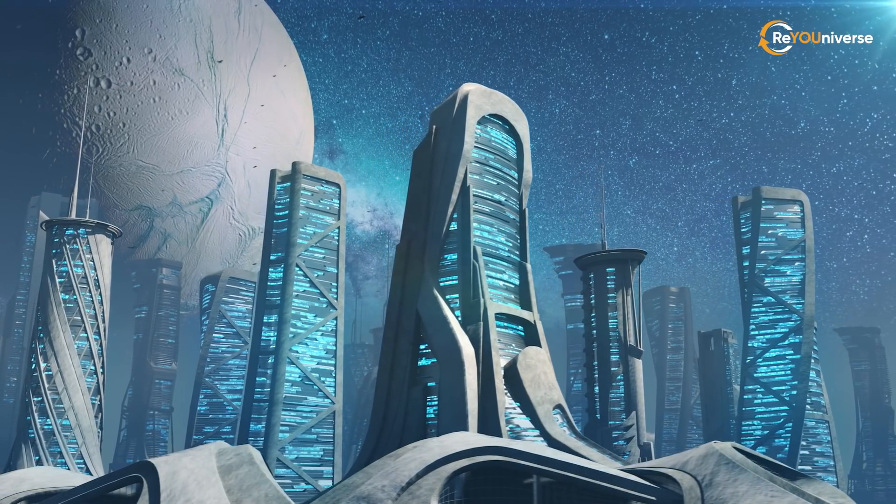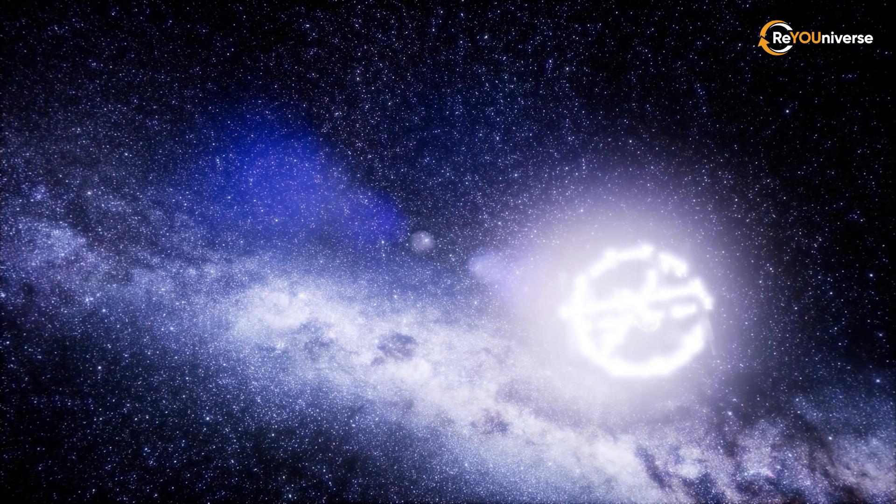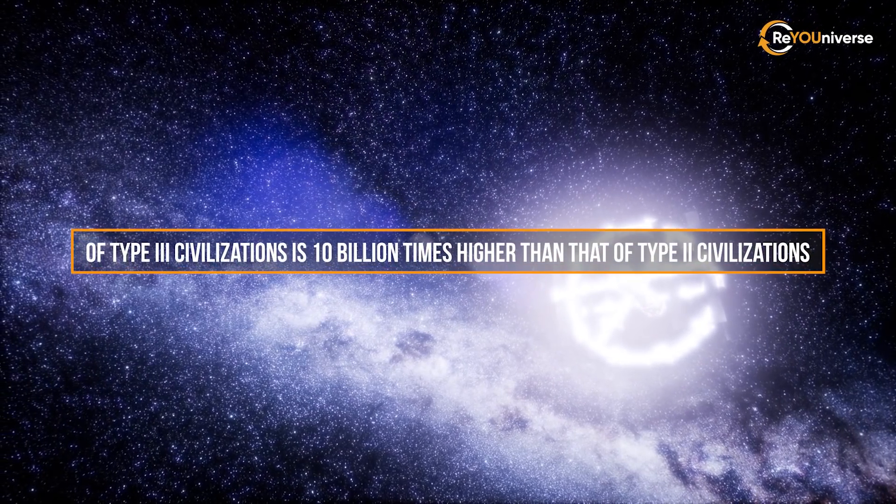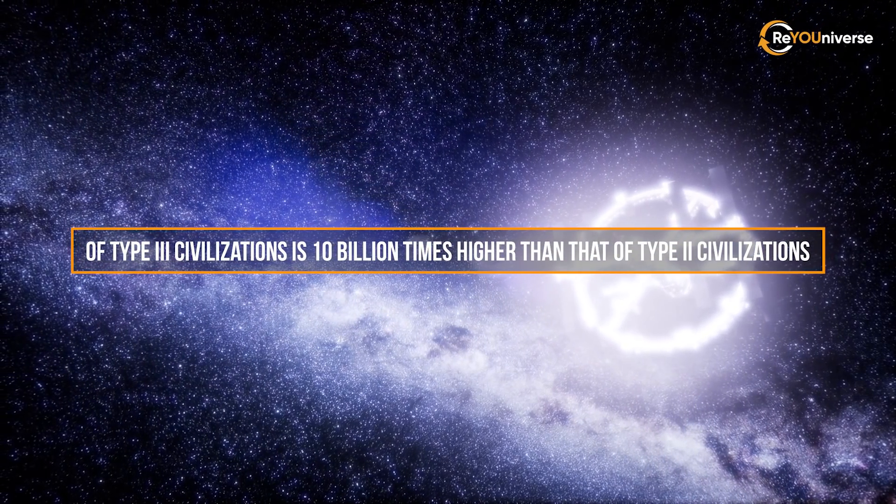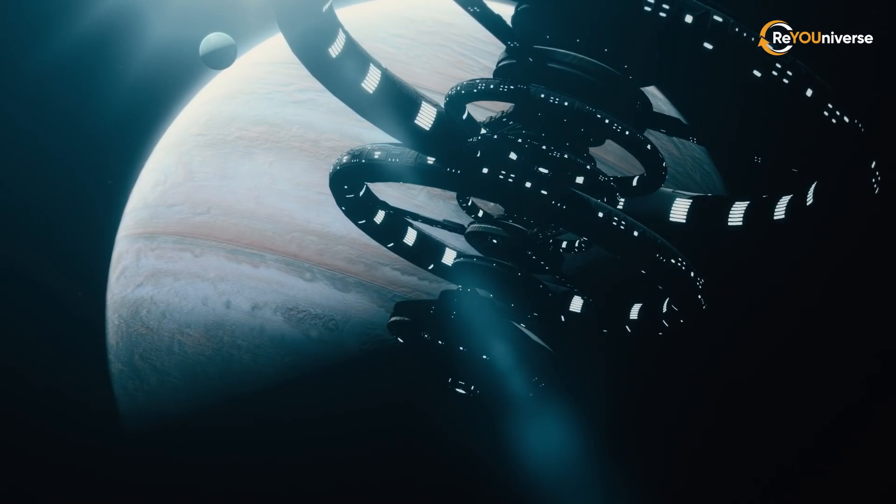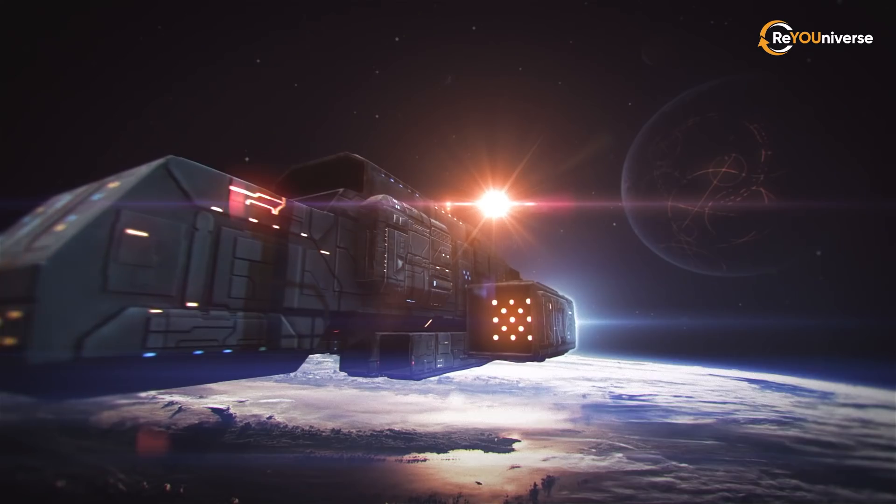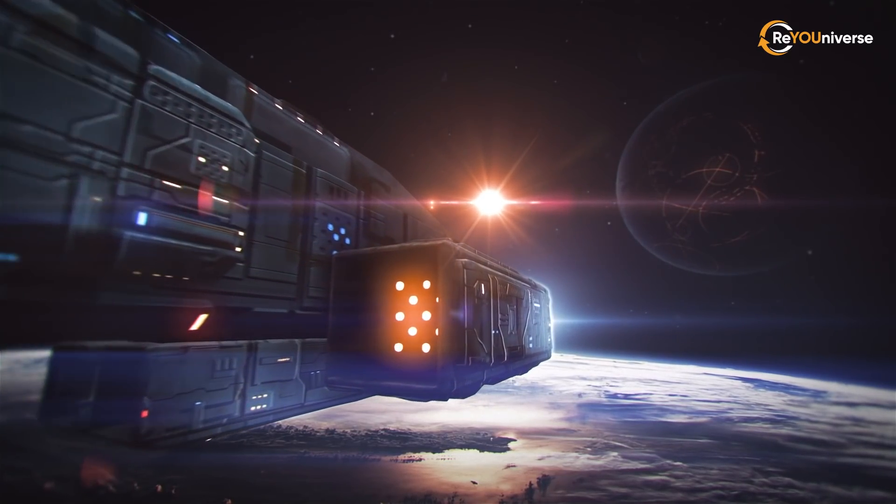Thus, the main types differ from each other by a factor of 10 billion, i.e. the energy consumption of Type 3 civilizations is 10 billion times higher than that of Type 2 civilizations. The Kardashev scale also interested other theoretical physicists, which is why new civilization levels appeared.